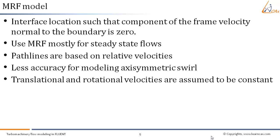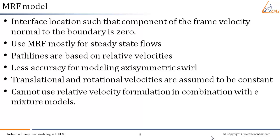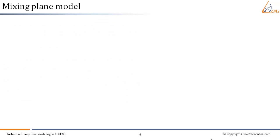Another limitation is that translational and rotational velocities are assumed to be constant. Also, you cannot use relative velocity formulation in combination with the mixture model. The mixing plane model is another approach to simulate flow through domains with one or more regions in relative motion. The biggest limitation of the MRF model is that it is applicable only when the flow at the interface between adjacent moving and stationary zones is nearly uniform or mixed out. If this is not true, the results obtained from the MRF approach may have some issues.